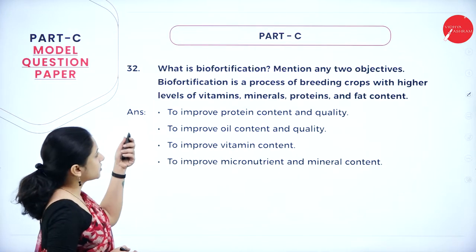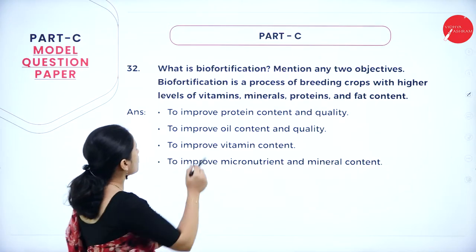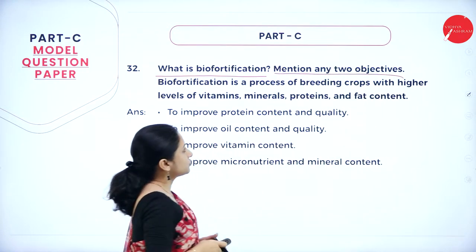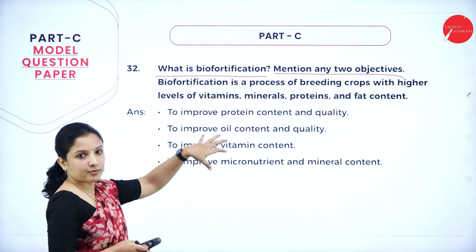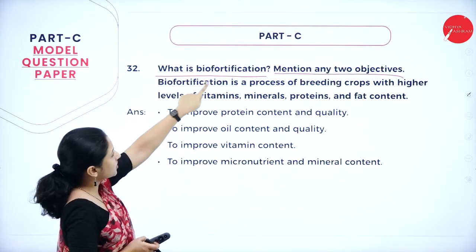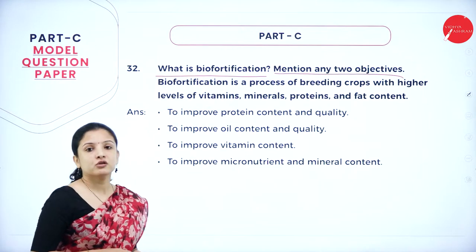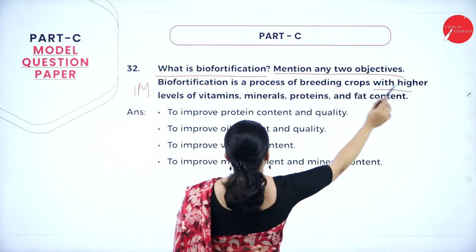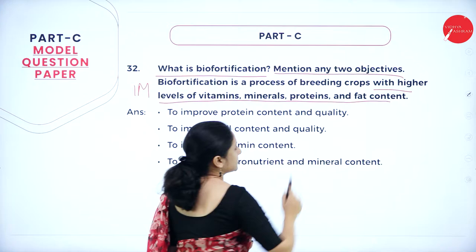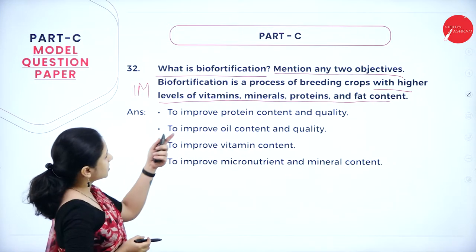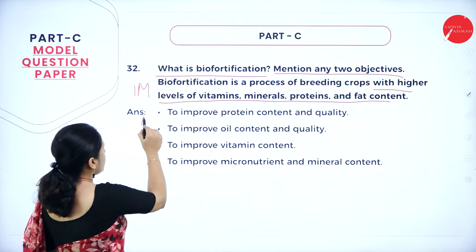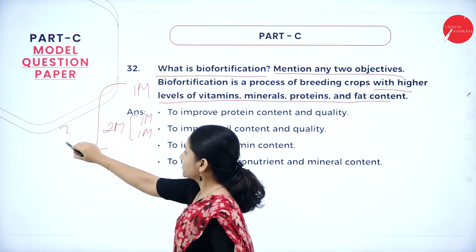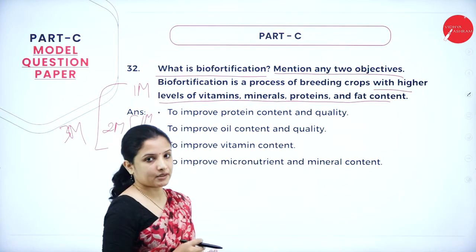Next, question number 32: what is biofortification, and mention any two objectives. This question has two parts. Biofortification is a process of breeding crops with higher levels of vitamins, minerals, proteins, and fat content — this definition fetches one mark. Then mention any two objectives of biofortification — each fetches one mark, giving two marks. The whole question is worth three marks.